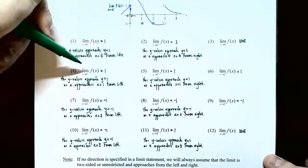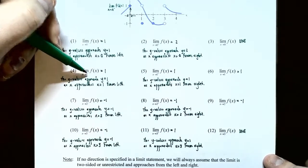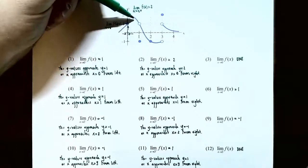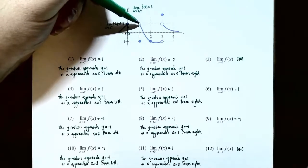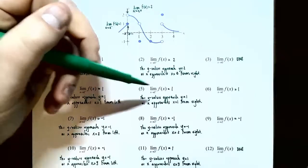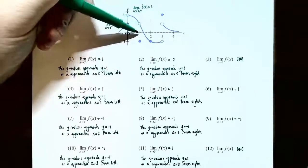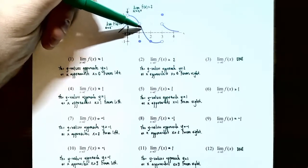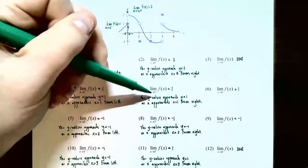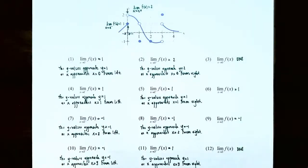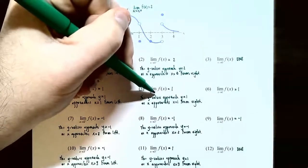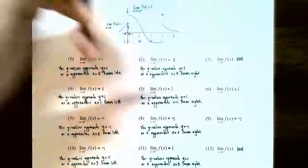Number four: the limit as x approaches one from the left. Approaching from the left side, the y values are getting close to the hole in the graph at y equals one, so the left-hand limit is one. Number five: the limit as x approaches one from the right. Getting closer to x equals one from the right, the y values approach the same hole at y equals one. So the right-hand limit is also one. By the theorem, since both one-sided limits equal one, the two-sided limit as x approaches one equals one.